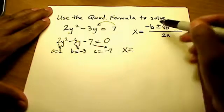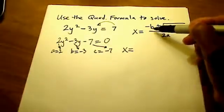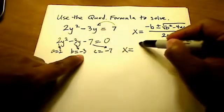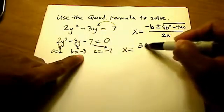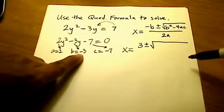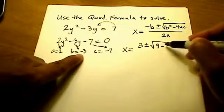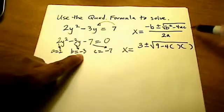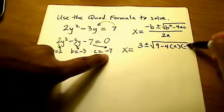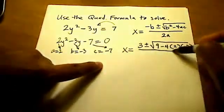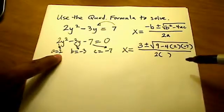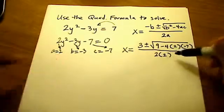So I have x is equal to — the way I read this is: give me the opposite of b. Since our b is negative 3, the opposite would be a positive 3, plus or minus b squared. B squared is just negative 3 times itself, which is 9, minus 4 times a and c, which are 2 and negative 7. The denominator is 2 times a, and our a is 2, so the denominator is simply 4.